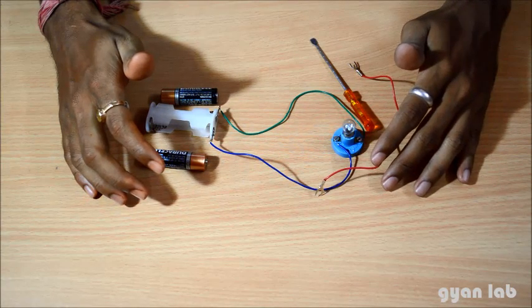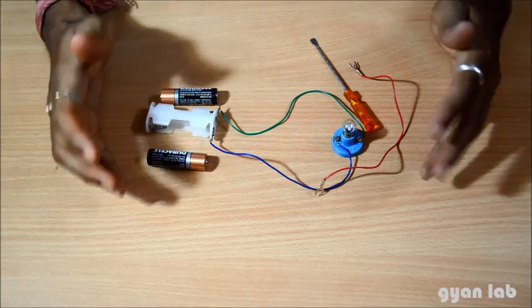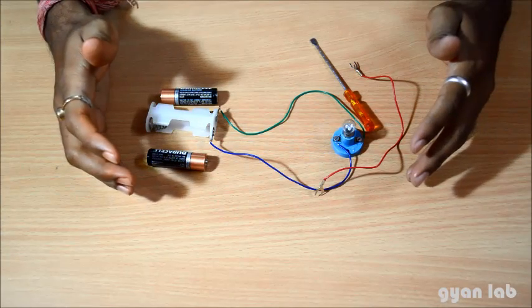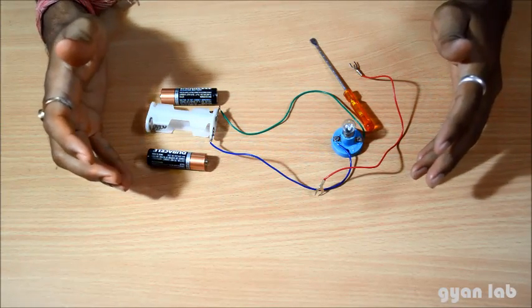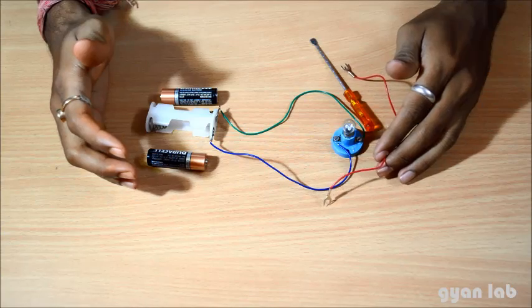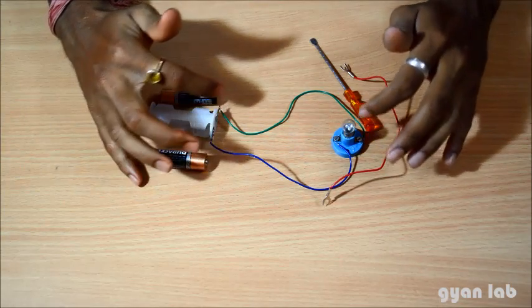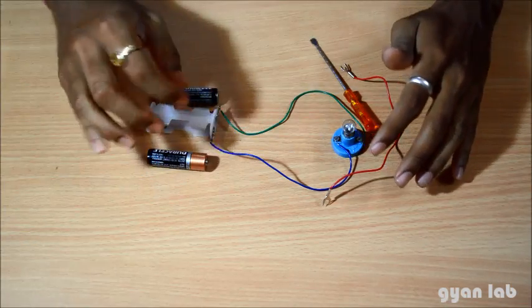The moment I connect this connecting wire, since electricity has a property that it takes the path of least resistance, in the case of the connecting wire it does not have to go through the bulb.